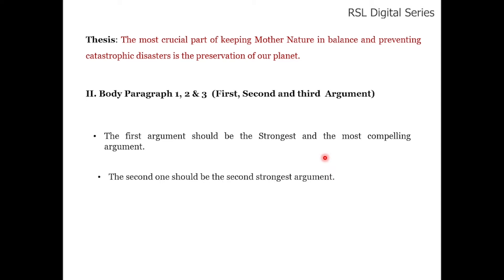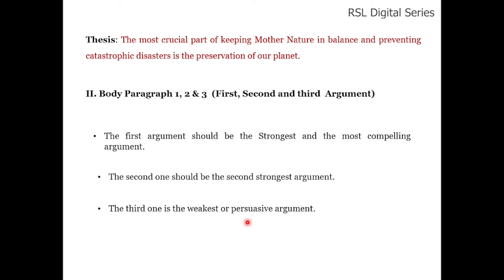The second argument should be the second strongest — discussing other causes for air pollution. The third argument is the weakest or most persuasive, covering precautions or the least important factors you want to highlight. In general, each body paragraph comprises five to seven sentences.